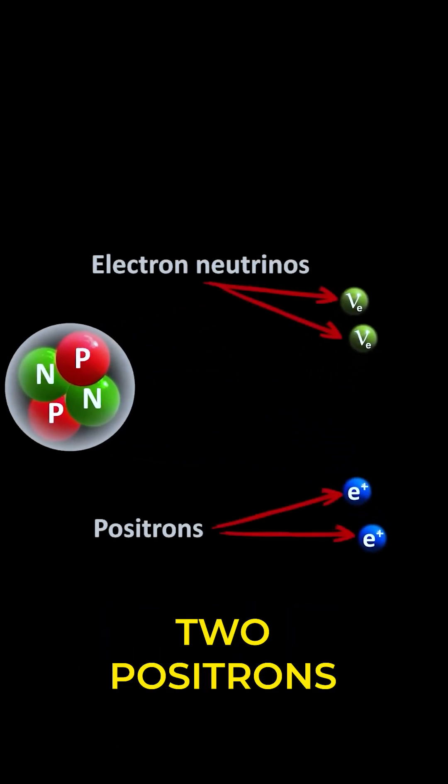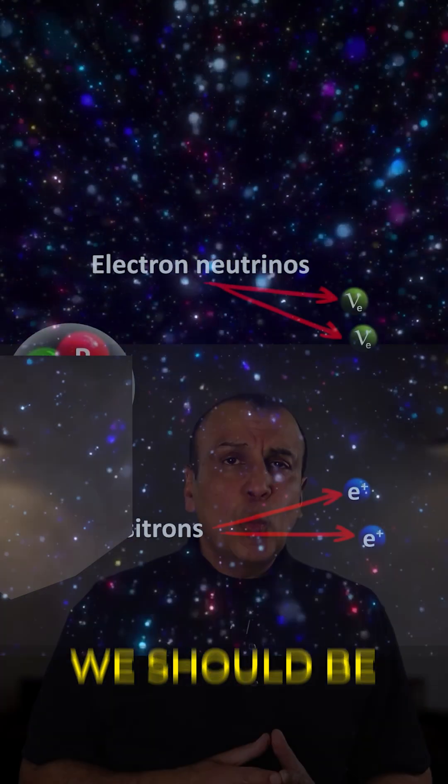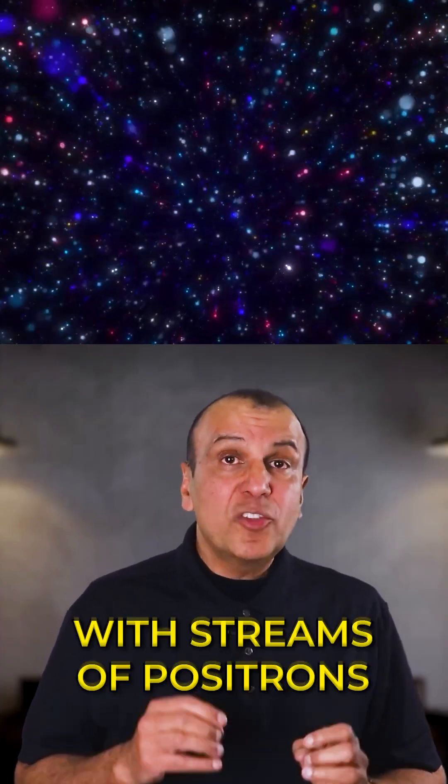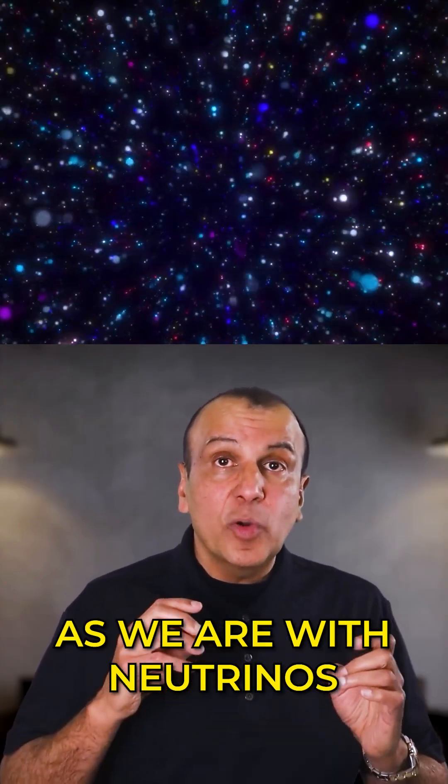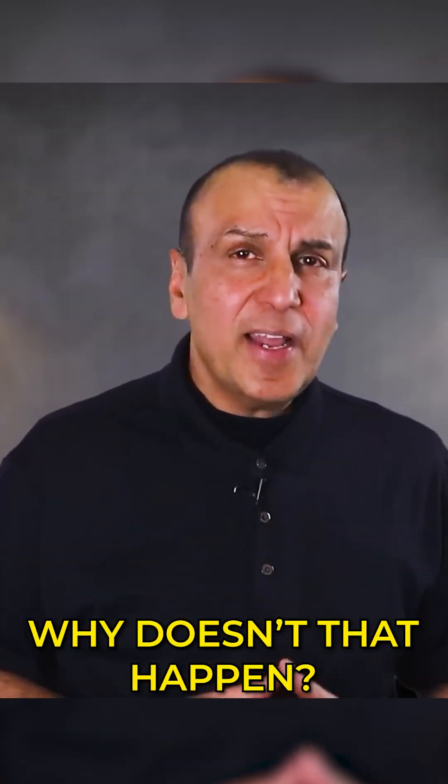This process produces two positrons and two neutrinos. We should be as bombarded with streams of positrons as we are with neutrinos. Why doesn't that happen?